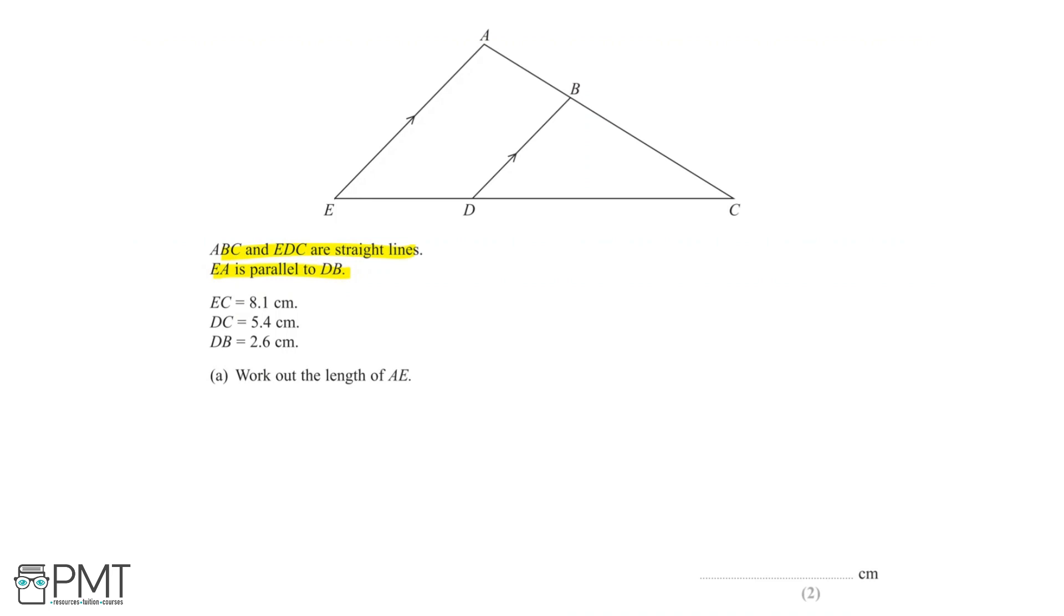We're also told that line EA is parallel to line DB. EC is equal to 8.1cm, DC is equal to 5.4cm, and DB is equal to 2.6cm. We need to work out the length of line AE.